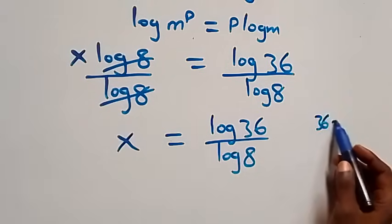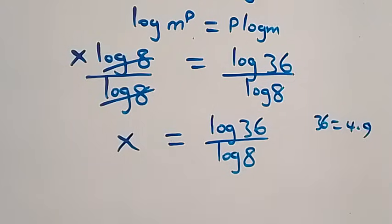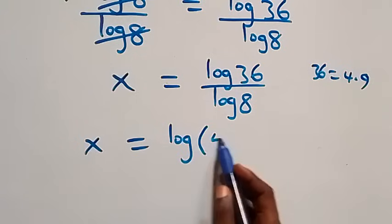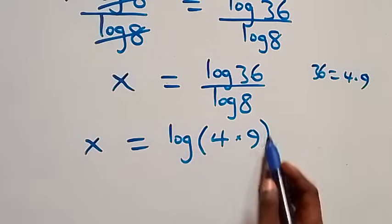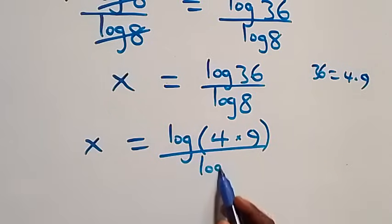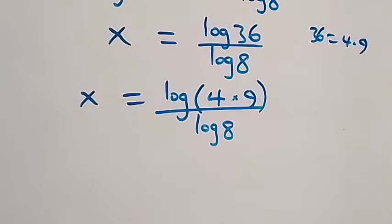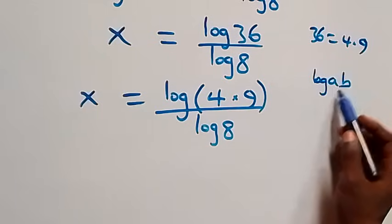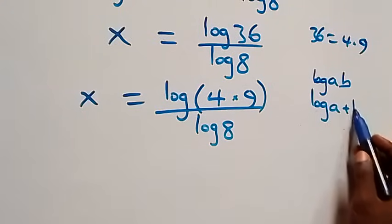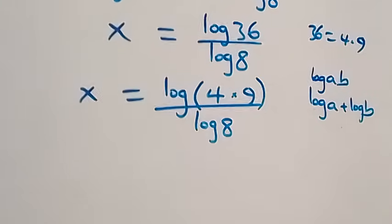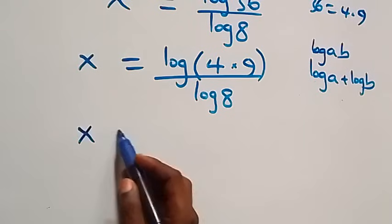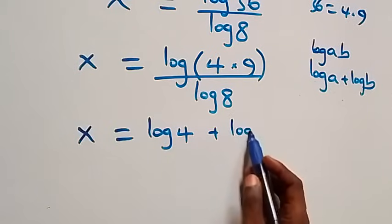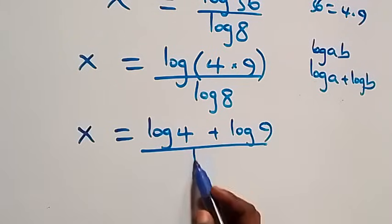We can write 36 as 4 times 9. So x equals log(4 times 9) over log 8. This follows from the law of logarithm: log(a times b) is the same as log a plus log b. So this becomes x equals log 4 plus log 9 over log 8.